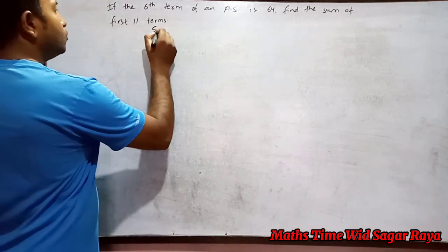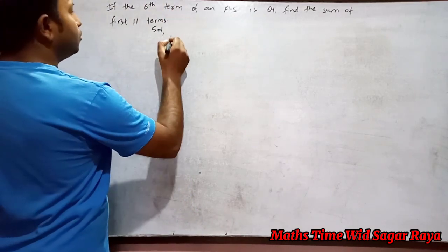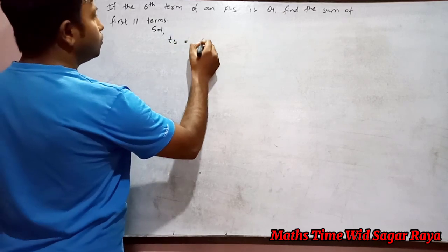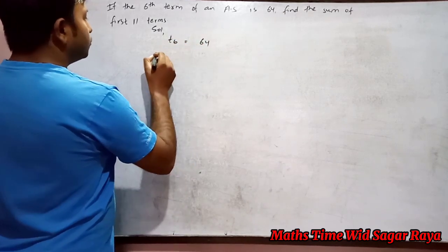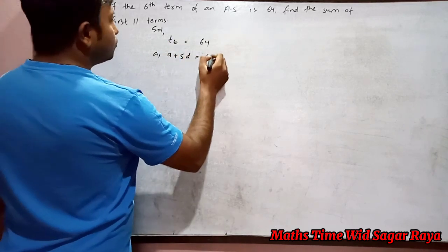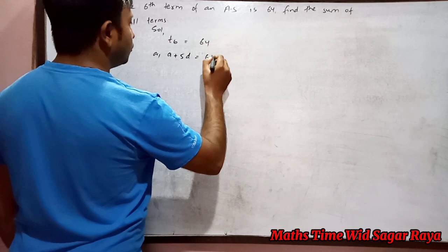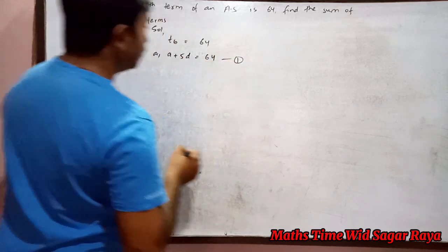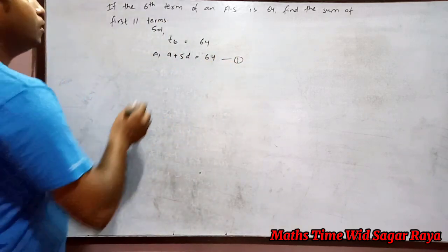Okay, so here we are given the sixth term denoted by t6 is equal to 64. So what is the formula for t6? a plus 5d equals to 64, so we can suppose this is equation 1. Now we have to find the sum of first 11 terms.